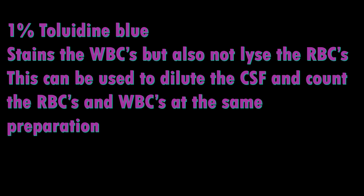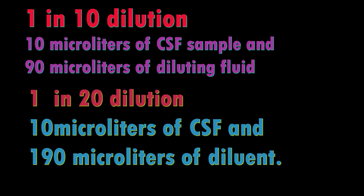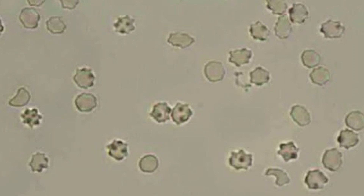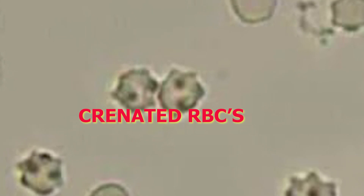Count RBCs and WBCs separately. If few cells are present, count all nine squares plus any one additional square to make 10 squares total, which makes calculation easy. If many WBCs are present, the sample can be diluted 1-in-10 or 1-in-20 according to the cell count, and calculations are made with the dilution factor. Report crenated RBCs as a percentage, as this has diagnostic value.